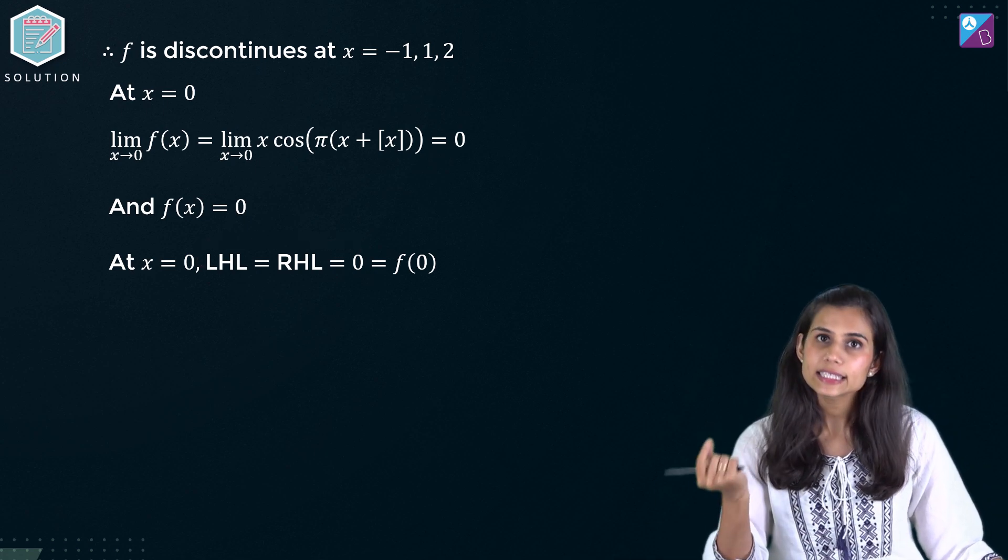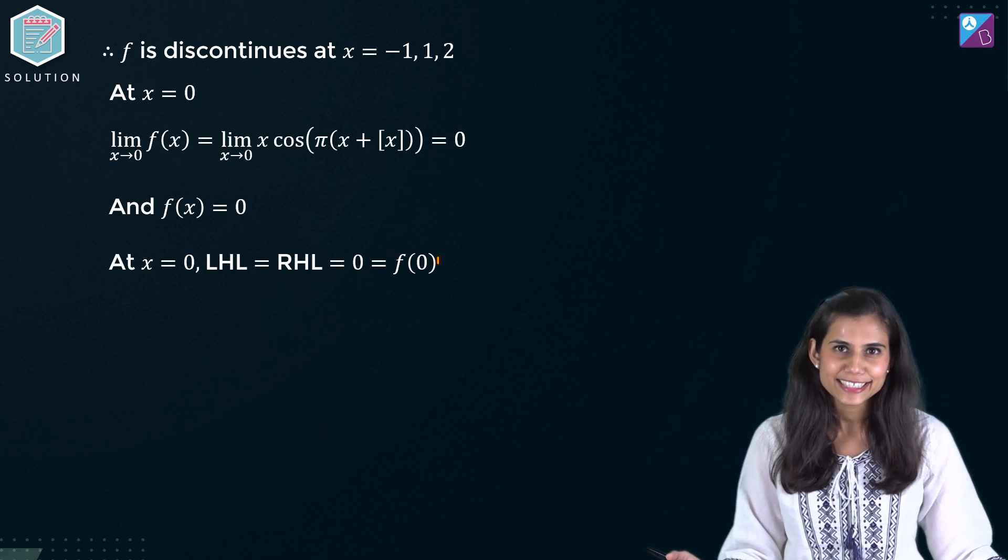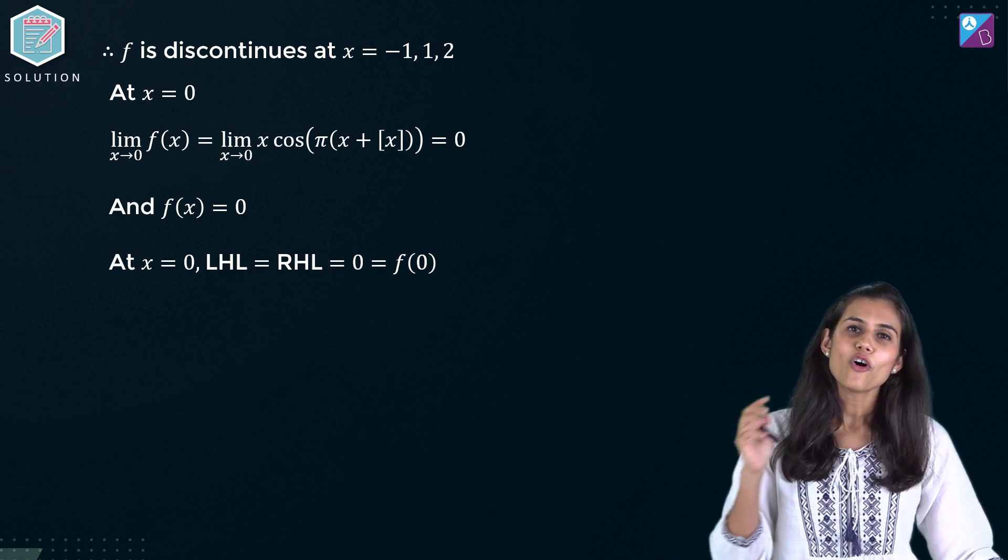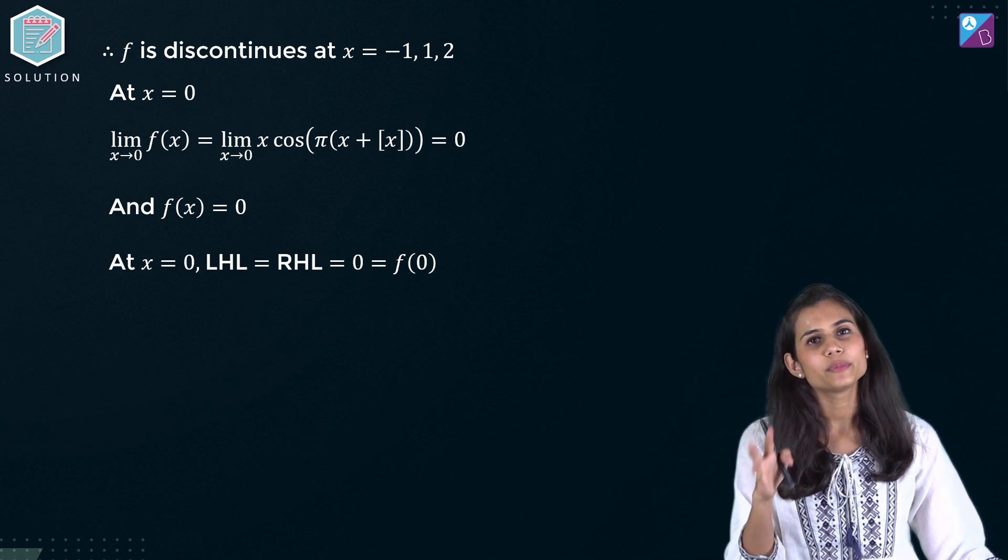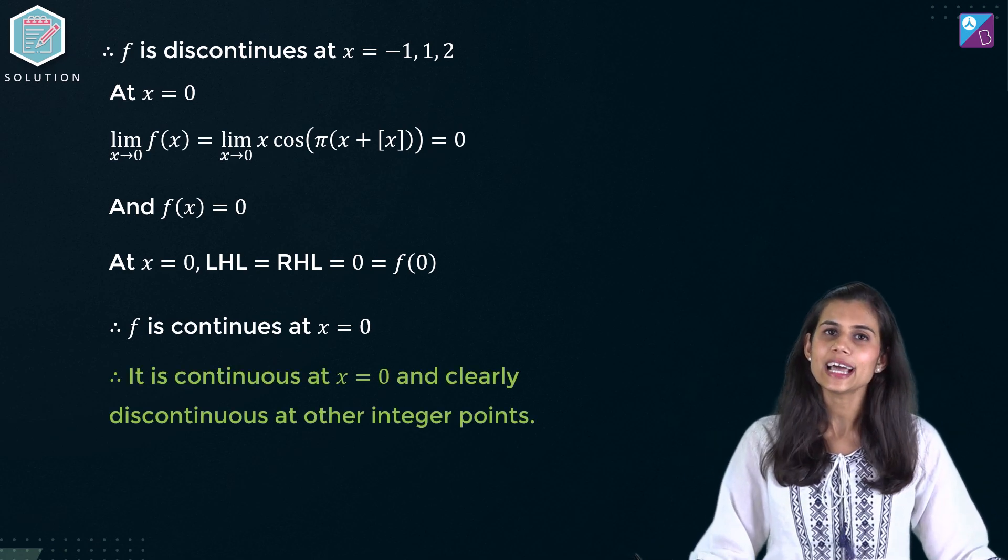What is it coming out to be? 0. And what about the value of the function at 0? Again it is 0. So limit of the function at 0 is coming out to be equal to value of the function at 0 which means f is yes continuous at 0.